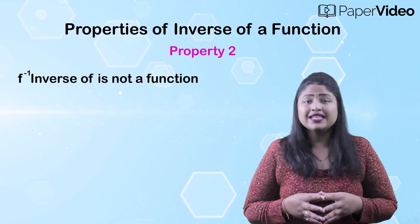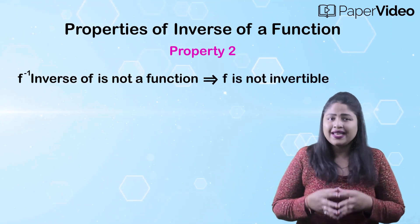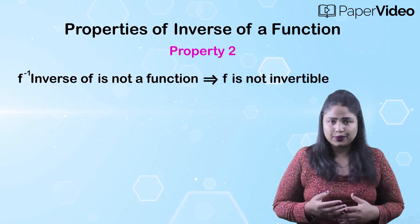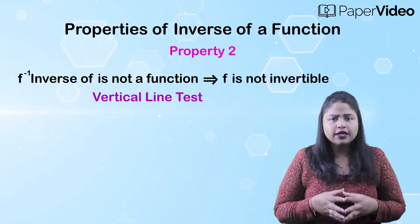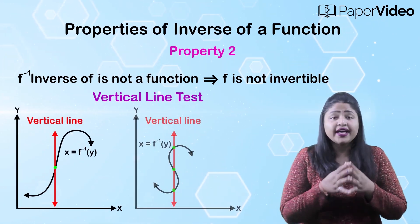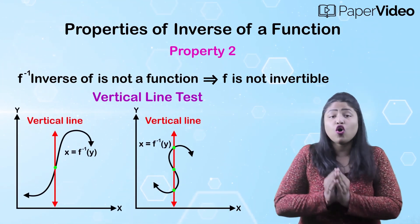According to the second property, if f inverse is not a function, then f is not invertible. So we can use the vertical line test to verify whether f inverse is a function or not.